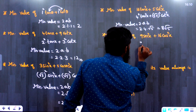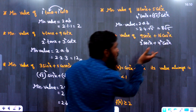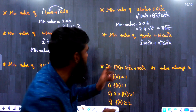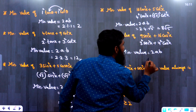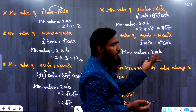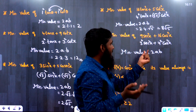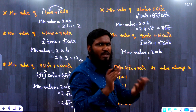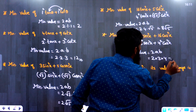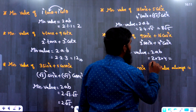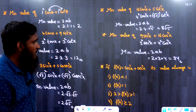Next question: we have 3²(sec²x) + 4²(cos²x). Here cos x and sec x are reciprocals, so a = 3 and b = 4. Minimum value = 2ab = 2 × 3 × 4 = 24.